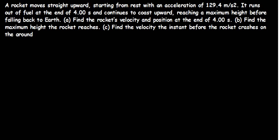It reaches a maximum height before falling back to the ground. Part A: find the rocket's velocity and position at the end of four seconds. Part B: find the maximum height the rocket reaches. Part C: find the velocity the instant before the rocket crashes on the ground.